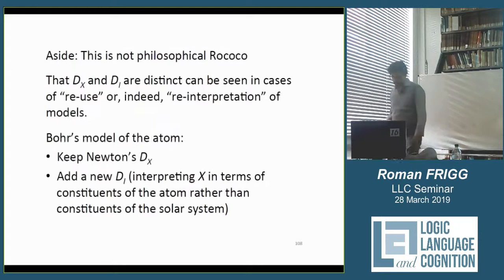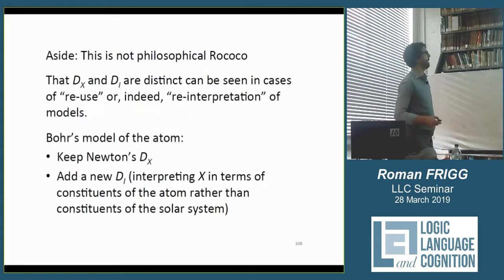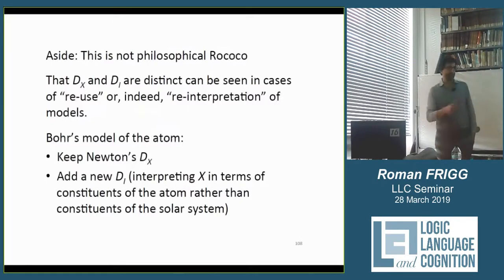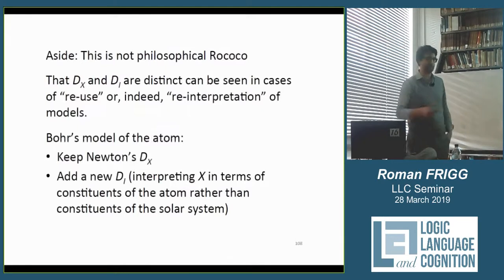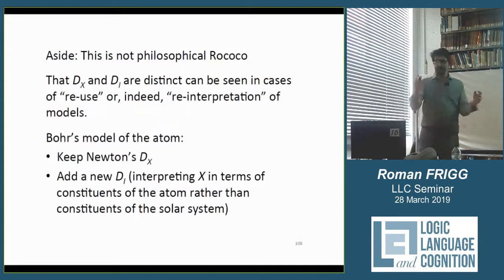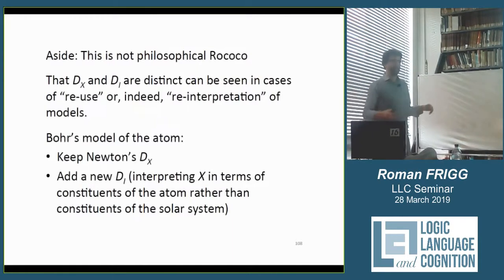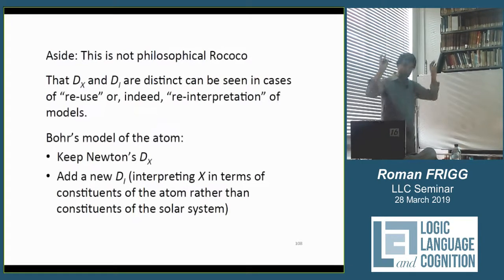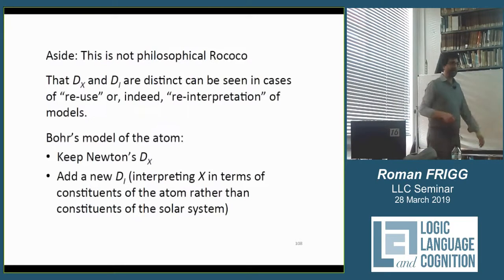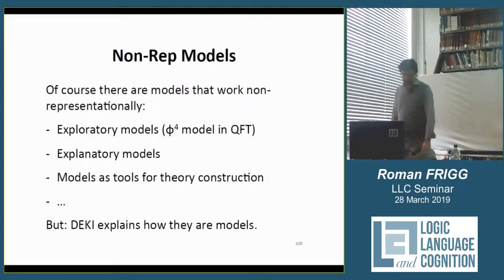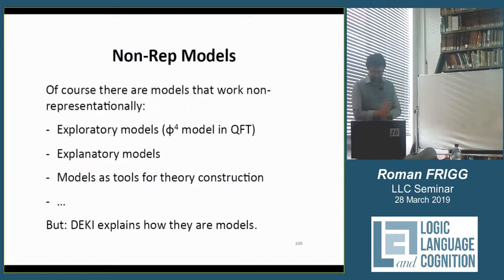This is not just philosophical rococo — it really helps you understand how things work, and you see that when you go through the history of science. When Bohr constructed his model of the atom, he effectively kept the same X as Newton: a big ball, a small ball, and all the rest. But he interpreted it differently. The 1/r² force is now not gravity but electrostatic attraction. The big ball is the proton, the small ball is the electron. You interpret the same object differently, and you get a model of an atom — or more precisely, an atom-representation with the hyphen.